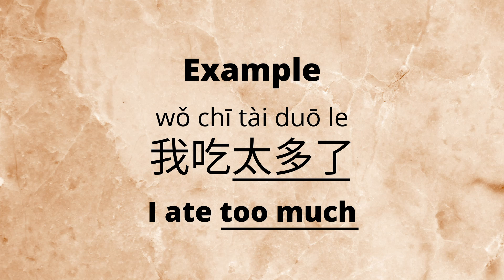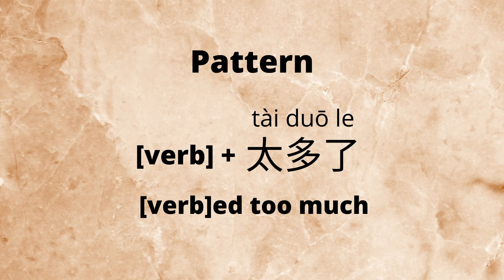我吃太多了. I ate too much. This is in the pattern of verb plus 太多了 to say that the subject verbed too much.